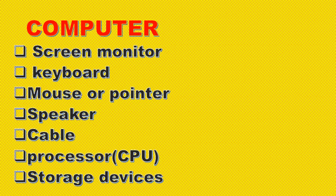The fourth use was giving instructions when clicked, and this is none other than the mouse or the pointer. When we click the mouse, it gives an instruction. The fifth use was connecting digital devices to electric power, and the part that does this is known as a cable. The last use was producing sound, and for that we use the speakers.